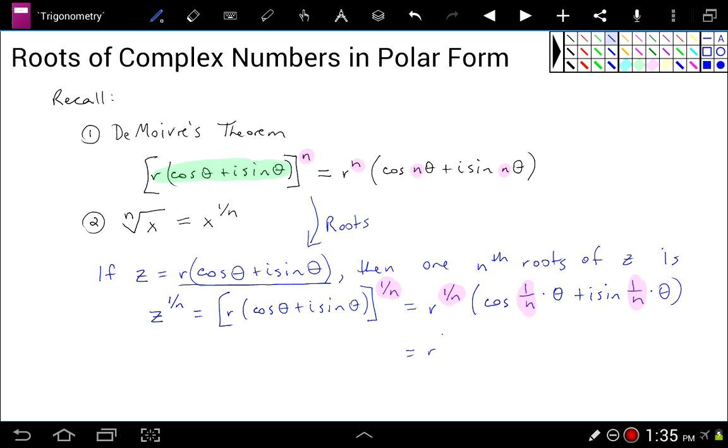And then if we simplify this, you get r to the 1 over n, or if you prefer, that's the same thing as just the nth root of this real number r times the cosine of theta over n, when I multiply 1 over n by theta, I get that, plus i times the sine of theta over n. So this is an nth root of this complex number z, r times cosine theta plus i times the sine of theta.